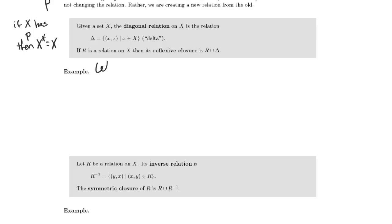So for example, I'm going to let X be the set ABC. In that case, the diagonal relation is the relation AA, BB, and CC. It's not hard to imagine why this is called the diagonal relation.